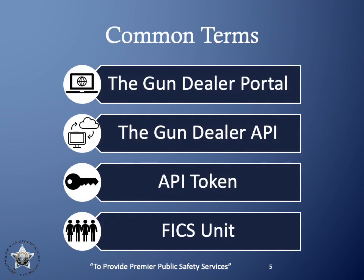Before explaining what the API is, let's identify some key terms. The gun dealer portal is a website where gun dealers and their staff can create different types of transactions, manage existing transactions, and check the status of those transactions. It is also where gun dealers will go to generate their gun dealer API token. The gun dealer API is a RESTful web-based API that allows third-party applications to perform secure firearm and background checks as mandated by Oregon State law.